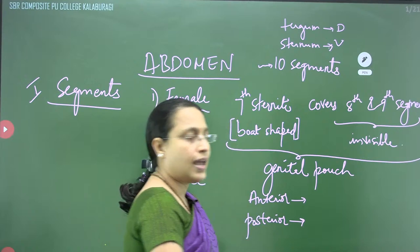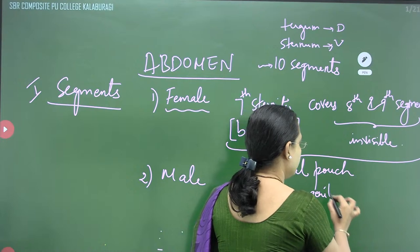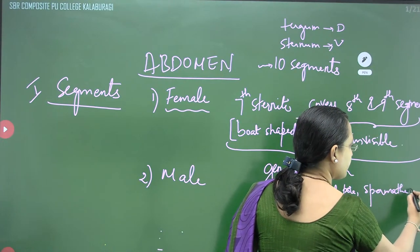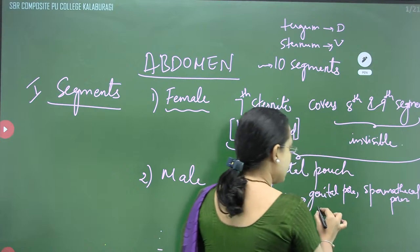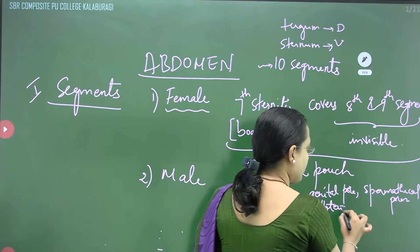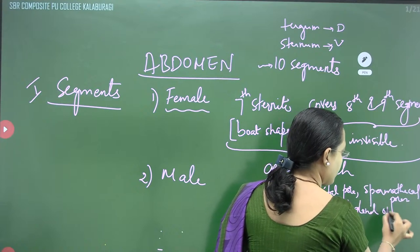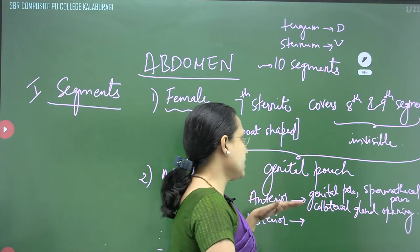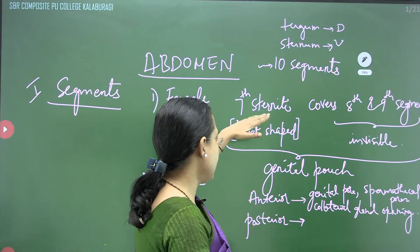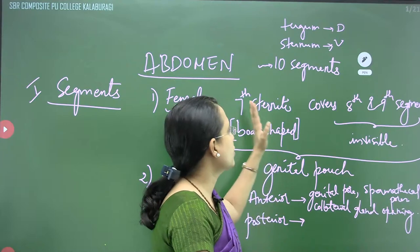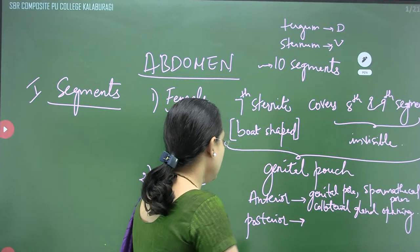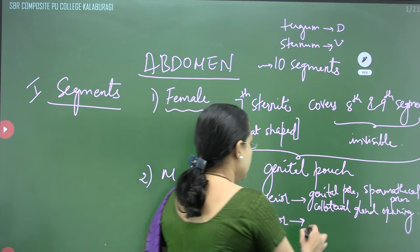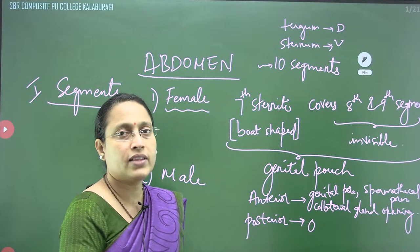The anterior genital pouch has an opening called the genital pore, as well as spermathecal pores and collateral gland openings. The genital pouch cannot be formed unless the 7th sternite covers the 8th and 9th. Posteriorly, it has an ovipositor, also called the ootheca chamber, where the ootheca is deposited with the help of the ovipositor.